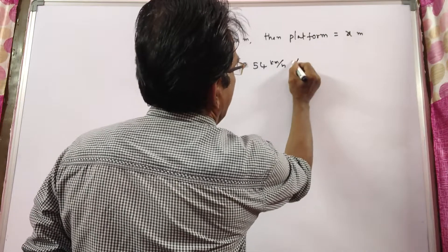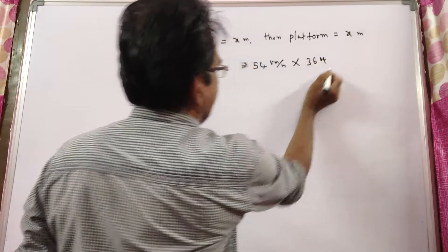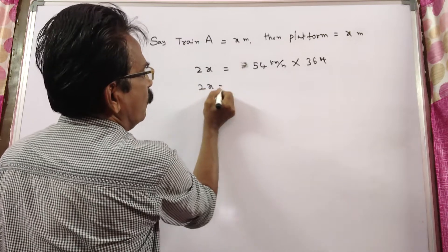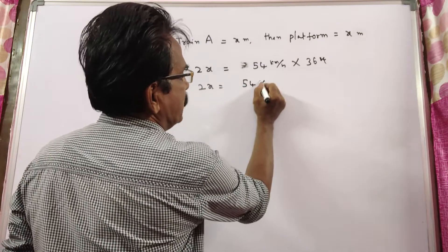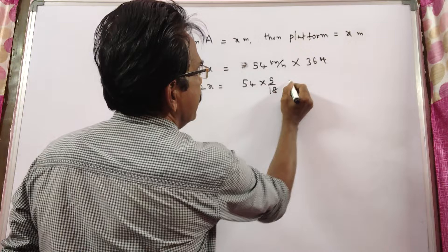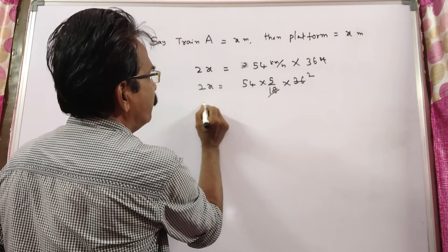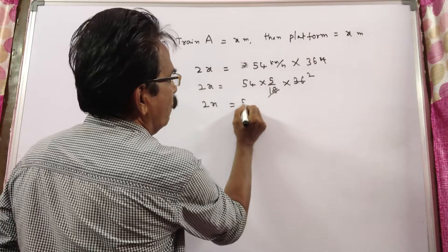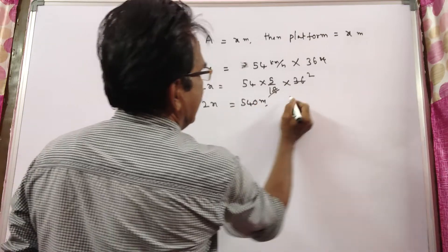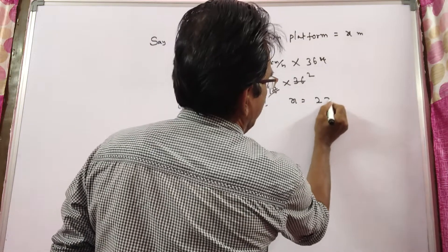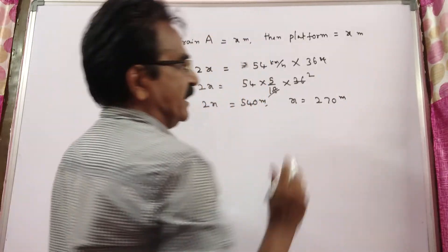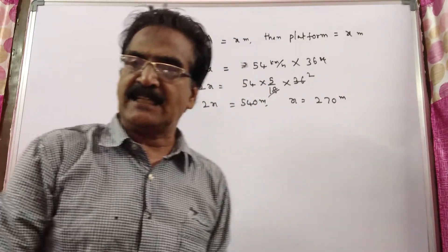Now 2x is equal to - I'm converting this into meters per second - 5 by 18 into 36, that's 15 into 36. So 2x is equal to 540 meters, and x is equal to 270 meters. This is the length of the platform and of course the length of train A also.